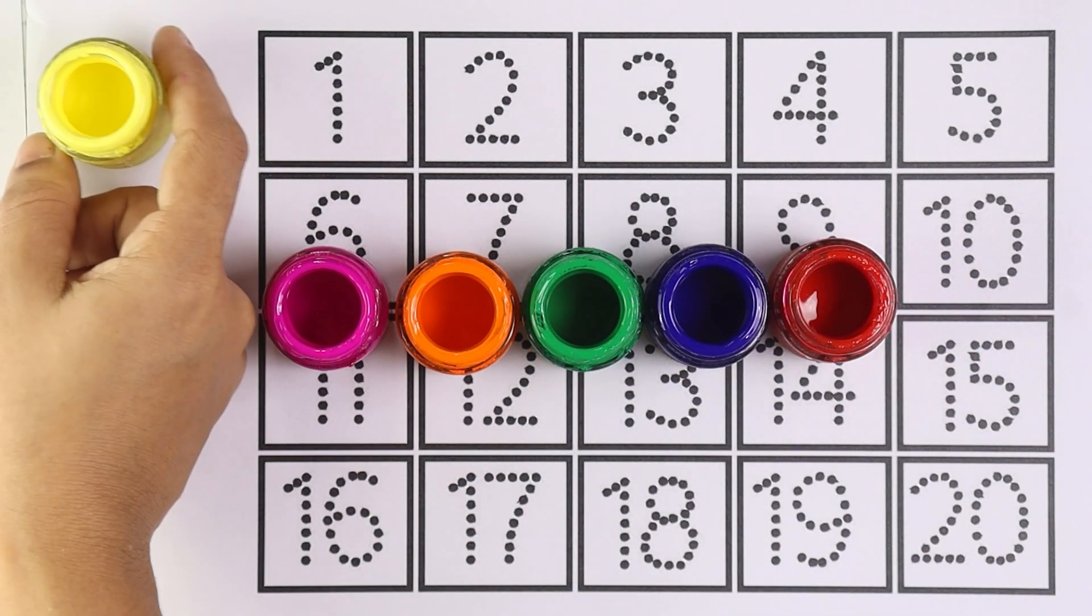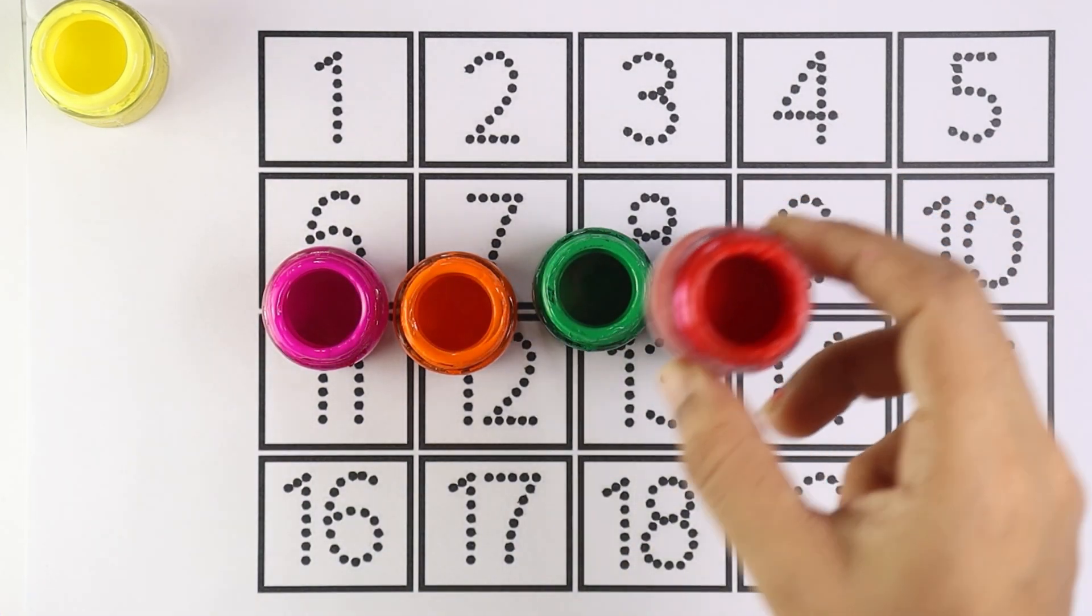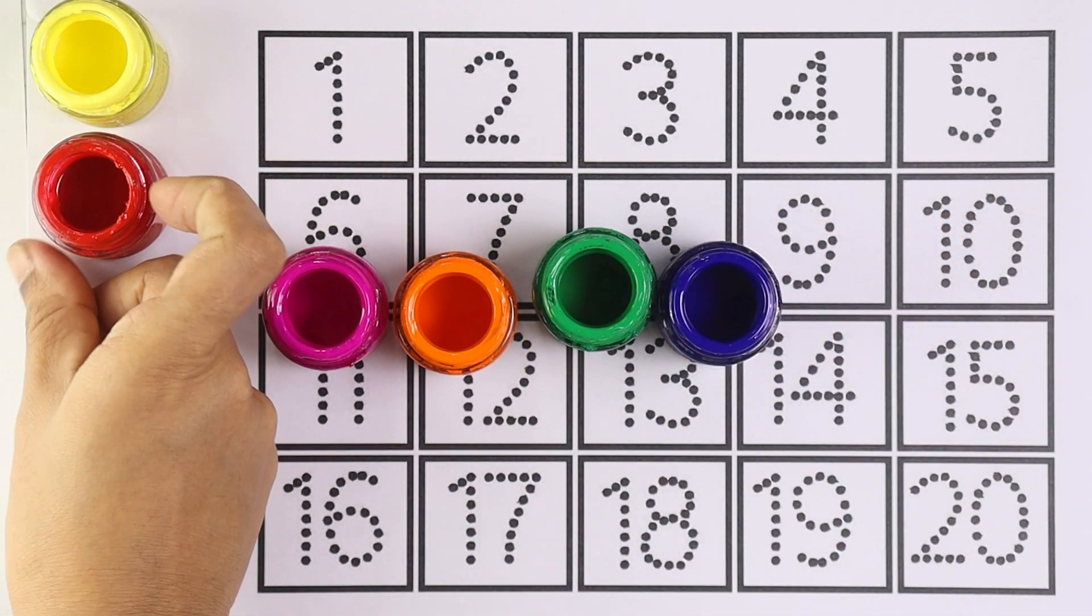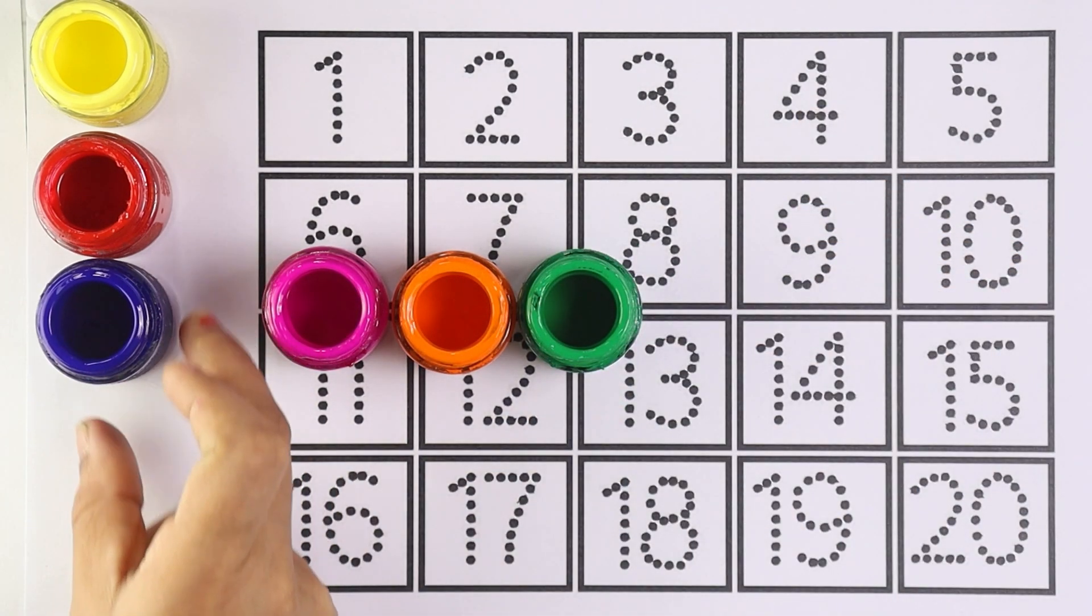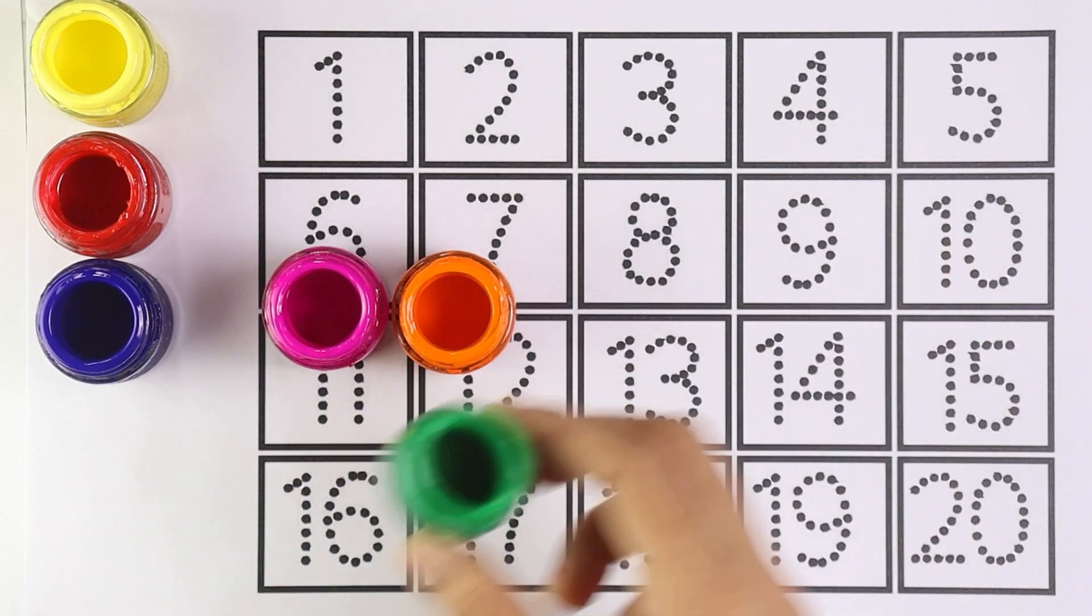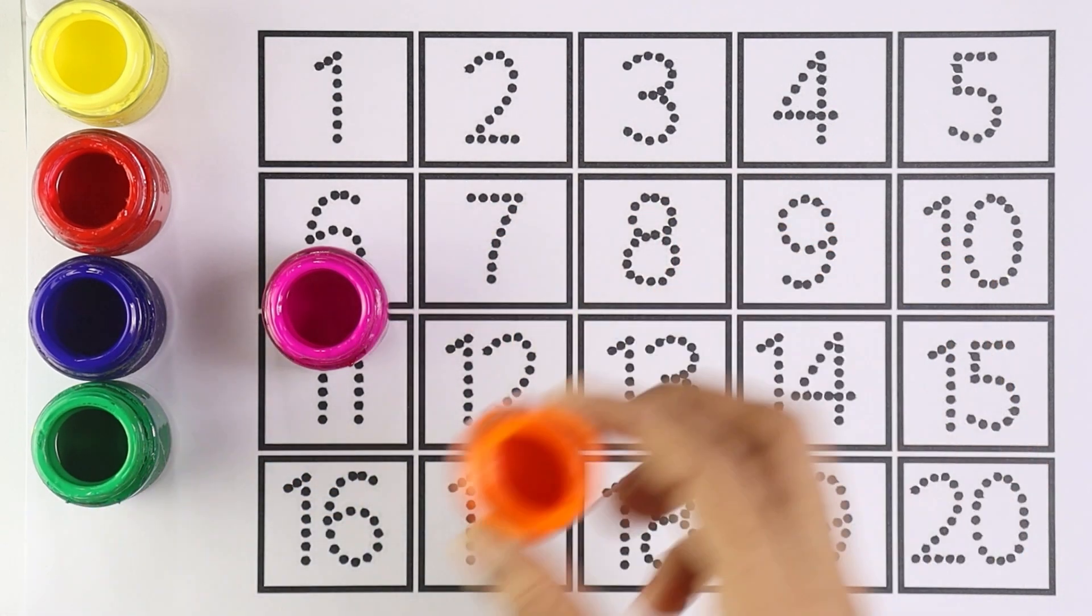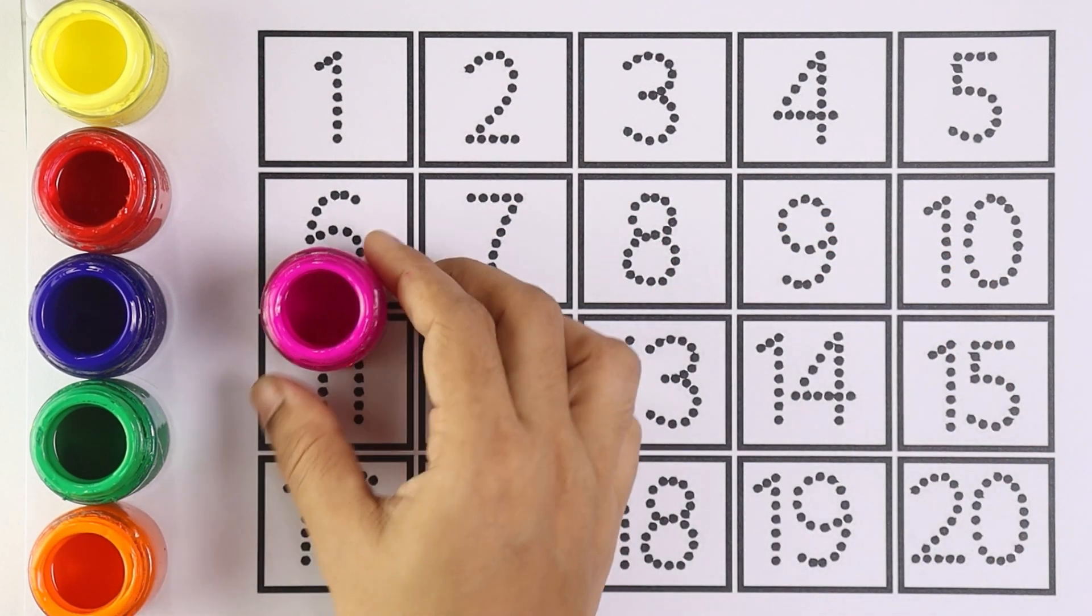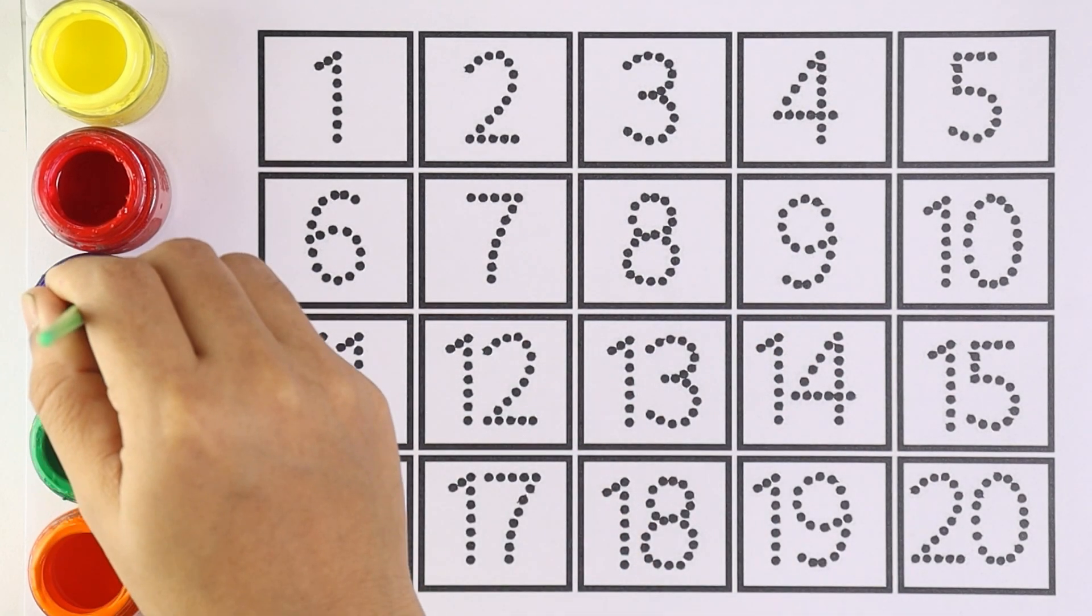With colors: yellow color, red color, blue color, green color, orange color, and pink color. Let's start writing numbers.